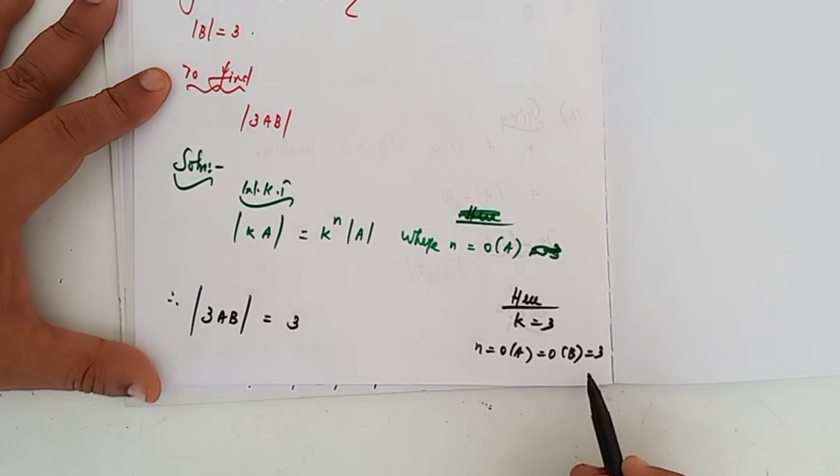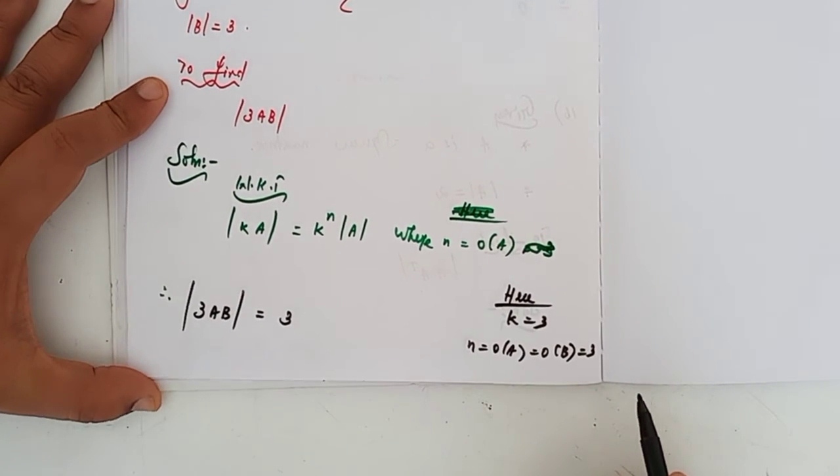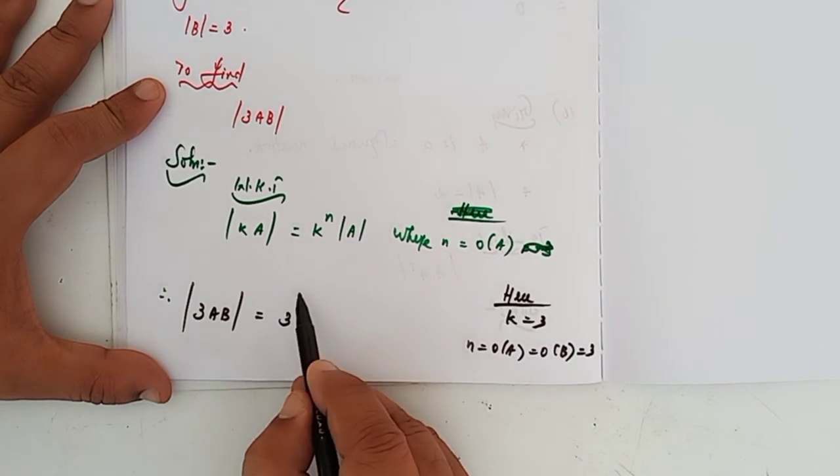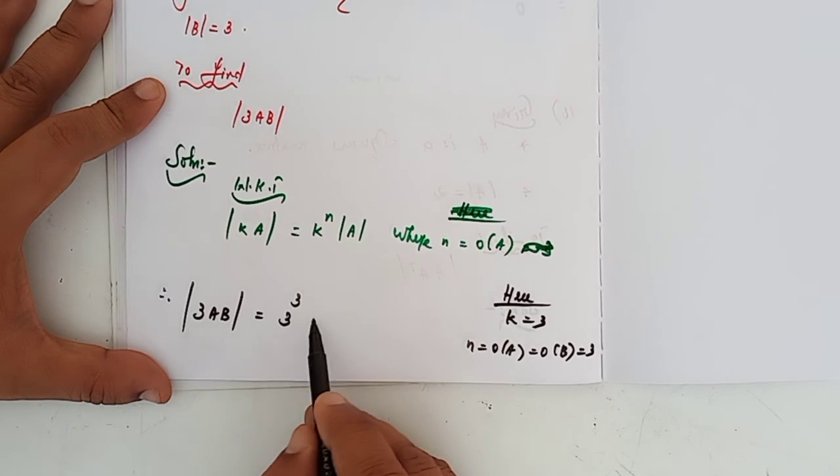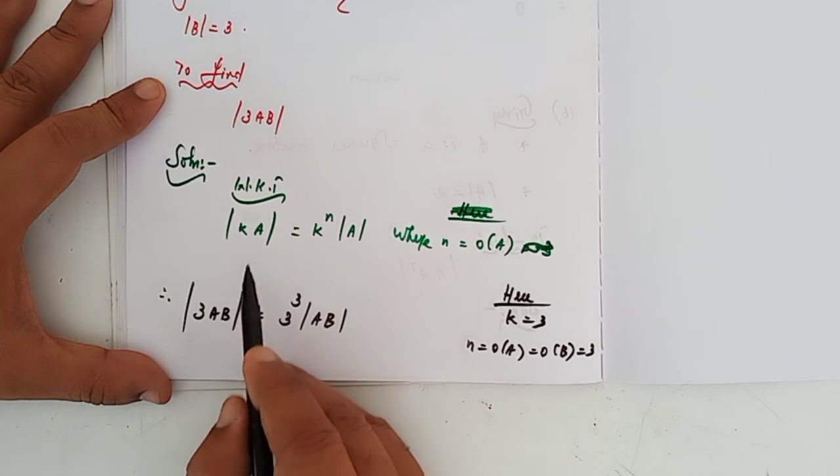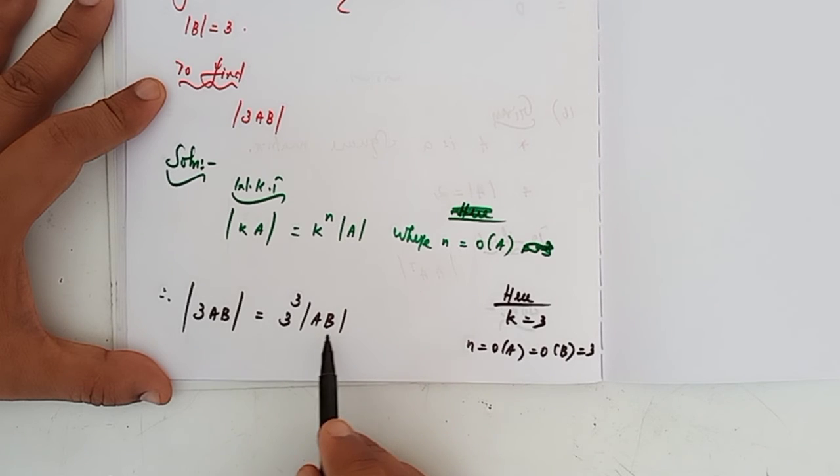So k value is 3 and n value is also 3. For determinant of AB instead of A we have AB, so we need determinant of AB.